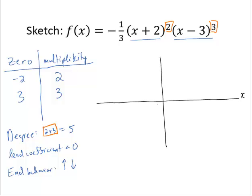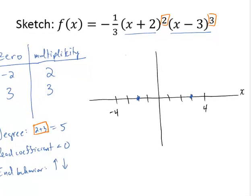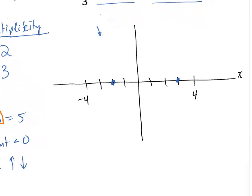So let's start by plotting the x-intercepts. I have an x-intercept at negative 2 and another x-intercept at 3. The end behavior is up on the left and down on the right, so the rest has to fit in there.